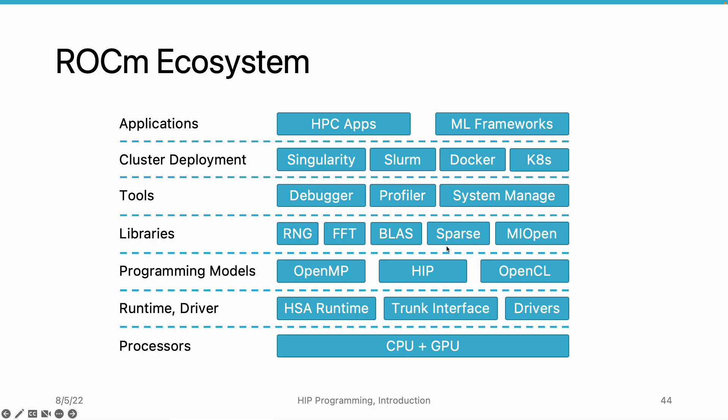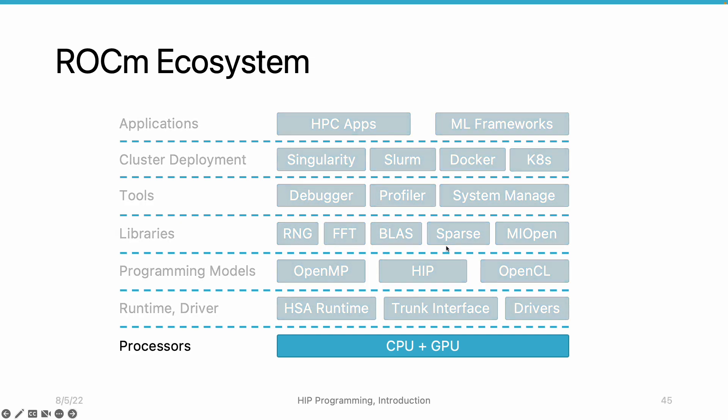Here, we list the main components of the ROCm ecosystem. You can see that the ROCm ecosystem covers many layers in the technology stack. At the bottom, we have processors, which includes both CPUs and GPUs. We can run ROCm programs on both CPUs and GPUs.